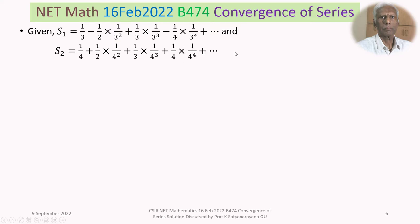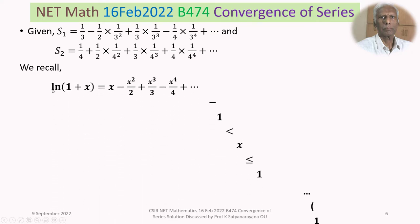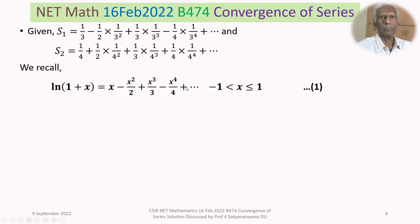We now recall the standard identity: ln(1+x), that is log base e of (1+x), equals x minus x²/2 plus x³/3 minus x⁴/4, plus so on and so forth, valid for minus 1 less than x less than or equal to 1. Call this equation 1.